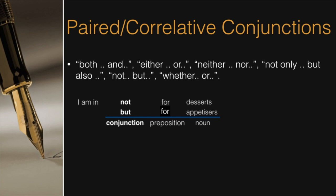Alternatively, if we do not want to repeat the preposition for, we can swap the positions of the conjunctions and the prepositions. So we can rewrite as, I am in for not desserts, but appetizers. Now a single preposition for applies to both the parallel ideas.